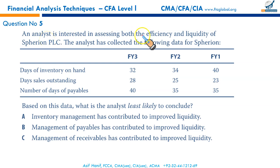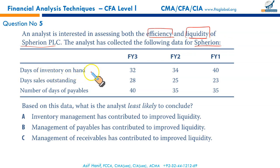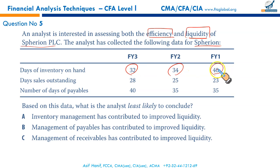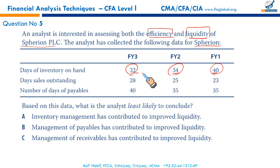An analyst is interested in assessing both the efficiency and liquidity of Spherion. Looking at days of inventory on hand: the company held inventory sufficient to cover 40 days of sales, then 34, then 32 days — inventory days have fallen and inventory turnover has increased. Holding inventory for a shorter period results in lower holding costs, lower obsolescence, less deterioration, and less pilferage. Lower inventory days means inventory sells more frequently — good for the company and good for liquidity.